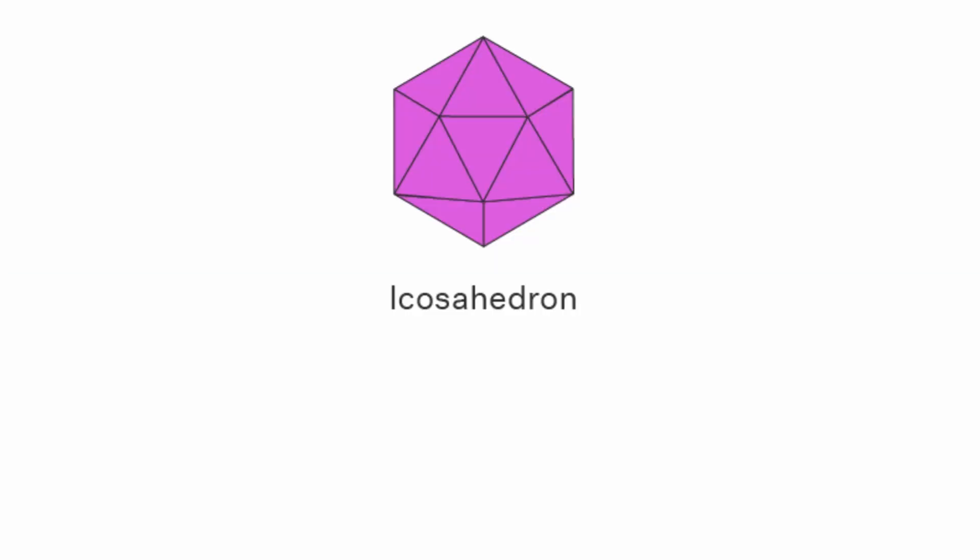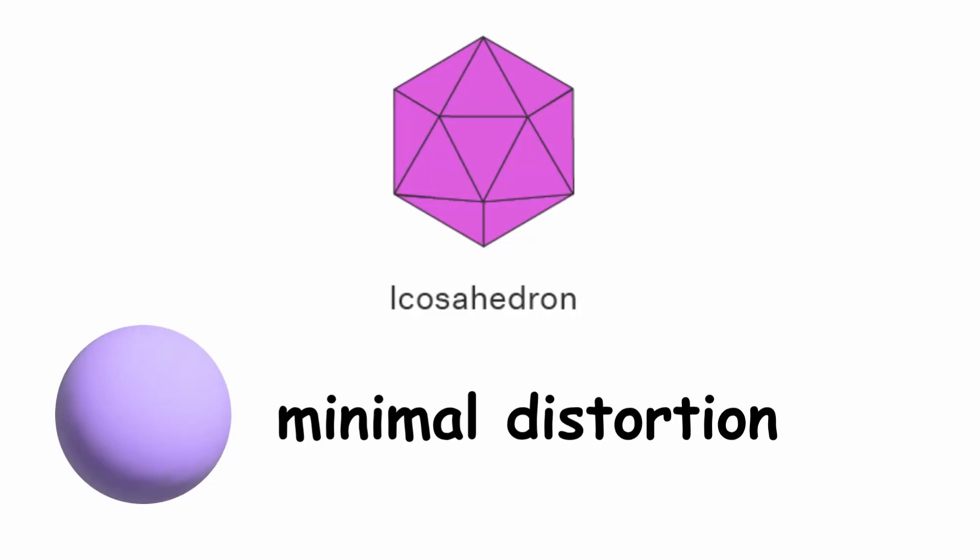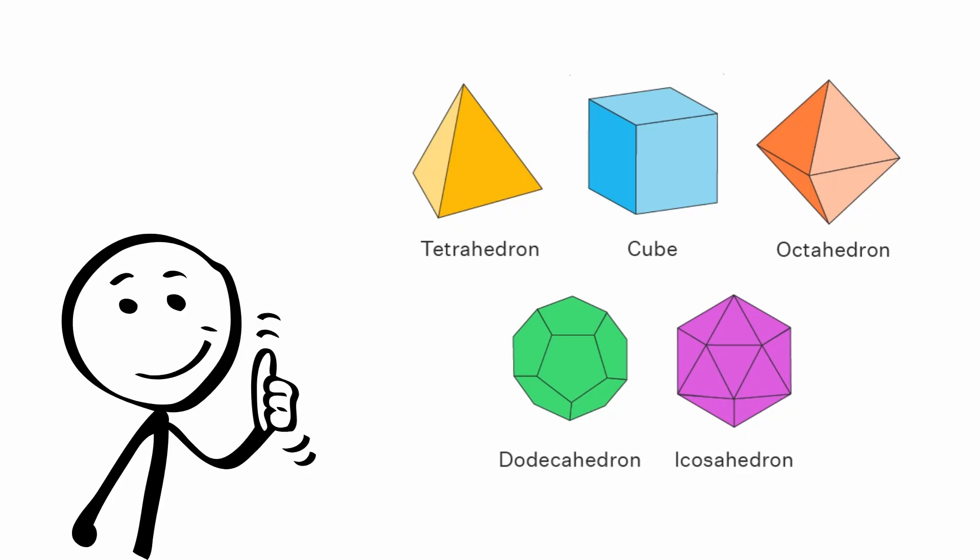The cube is the most common due to its simplicity and volume efficiency. The icosahedron, on the other hand, allows spheres to be approximated with minimal distortion. These figures not only represent mathematical perfection, but also concrete three-dimensional functionality.